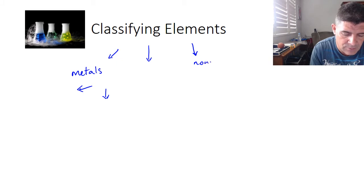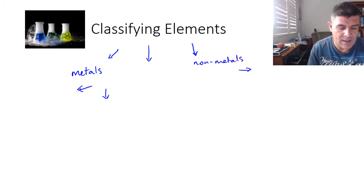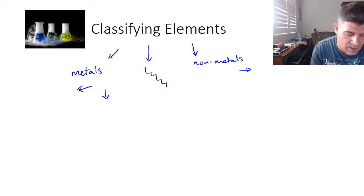the non-metals which are all to the right, and then in a little sort of staggered pattern in the middle are what we call the metalloids or semi-metals.